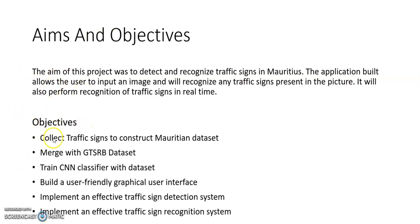The objectives are as follows. Firstly, we had to collect traffic sign images to construct a purely Mauritius dataset, because there was no Mauritius dataset available. After the collection, we had to merge it with the German Traffic Sign Recognition dataset found on Kaggle. This is done to enlarge the size of the dataset, hence increasing the performance of the system. After constructing the dataset, we had to train the CNN classifier with the created dataset.